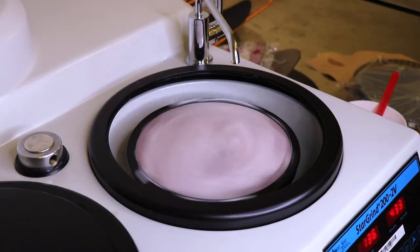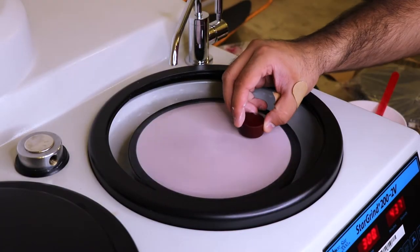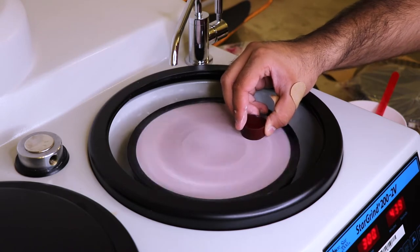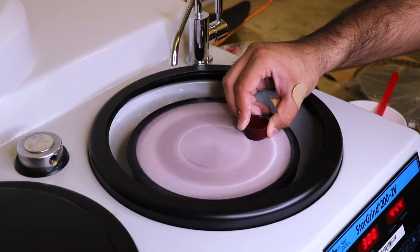Like before, you want to run the machine, then put your sample onto the polishing pad. With this, you can apply a little bit more pressure because the polishing compound does not cut as aggressively as the sandpaper did.